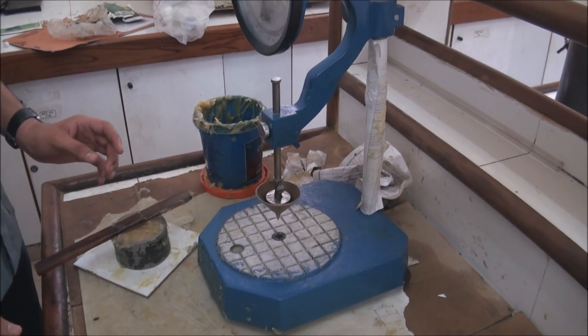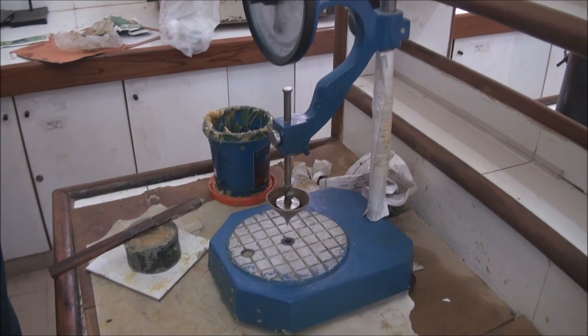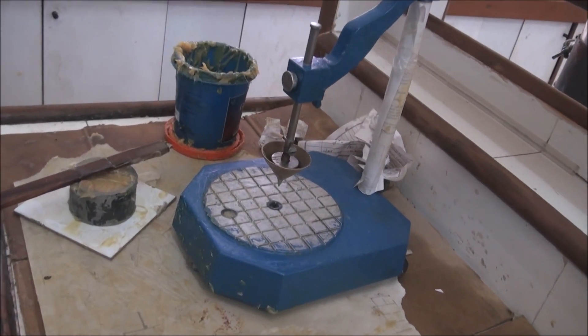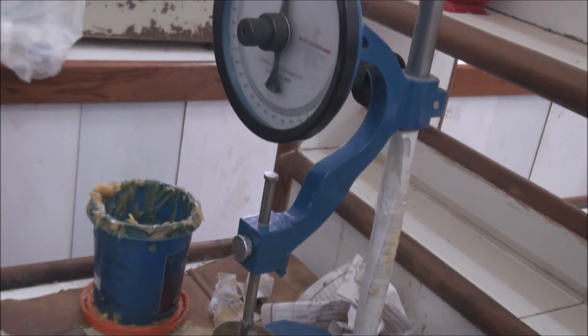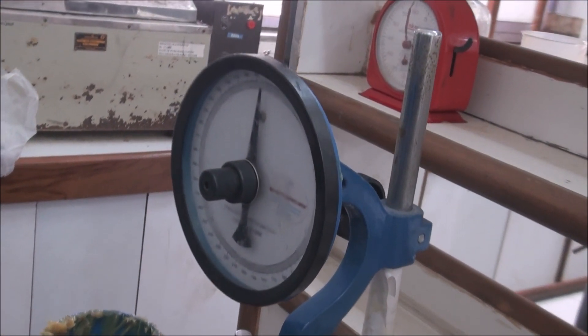The apparatus for the penetration index is described in brief. First comes the surface where we keep the bowl filled with grease for the experiment, along with the standard weight cone, the measurement needle, and the dial to note the readings.